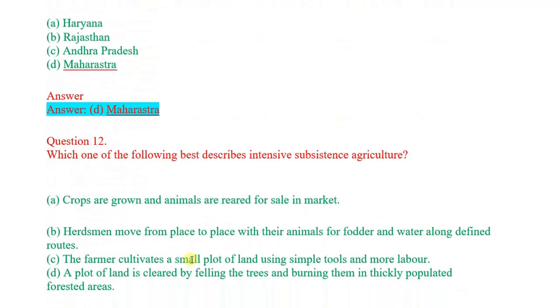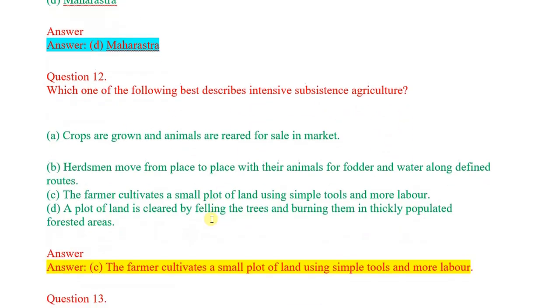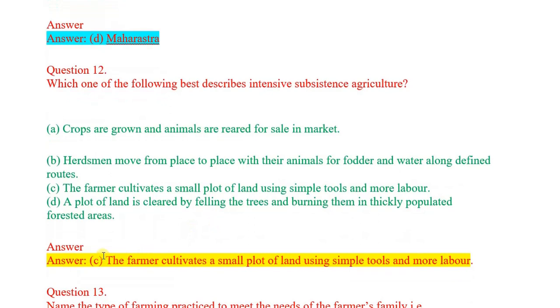12th question: Which one of the following best describes intensive subsistence agriculture? Correct answer: option C. The farmer cultivates a small plot of land using simple tools and more labor.